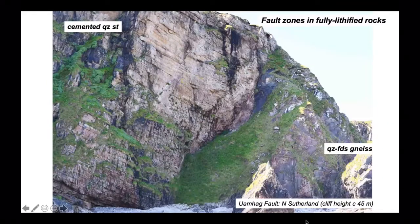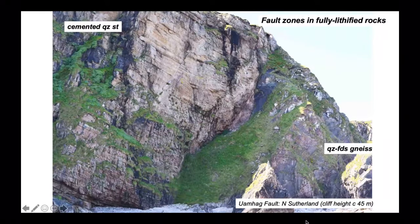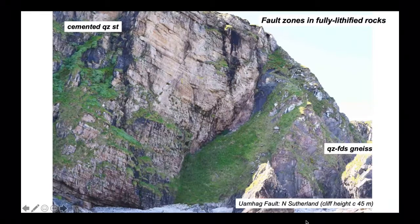Let's look at some fault zones in fully lithified rocks where there's no real original porosity. Here's a fault plane from the north coast of Scotland that juxtaposes younger Cambrian quartzites on the left against old gneisses on the right. It's a normal fault, down-throwing towards the left.